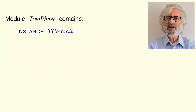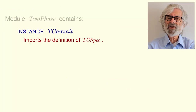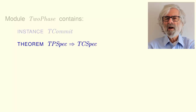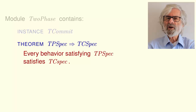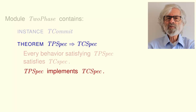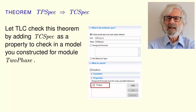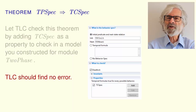Module 2Phase contains this instance statement, which imports the definition of TCSpec as well as all other definitions from module TCommit. Module 2Phase also contains this theorem, which asserts that for every behavior, if the behavior satisfies TPSpec, then it satisfies TCSpec. In other words, every behavior that satisfies TPSpec satisfies TCSpec. This is what it means for TPSpec to implement TCSpec. Let TLC check this theorem by adding TCSpec as a property to check in a model you constructed for module 2Phase. It should find no error.